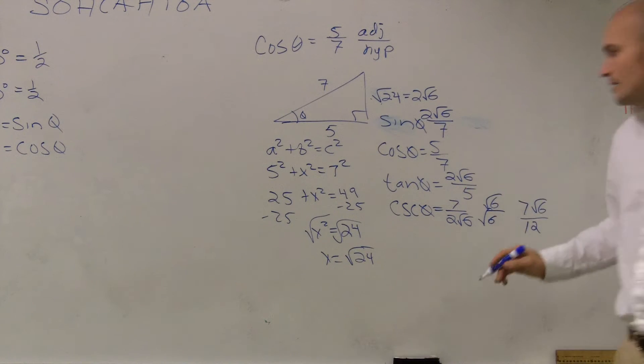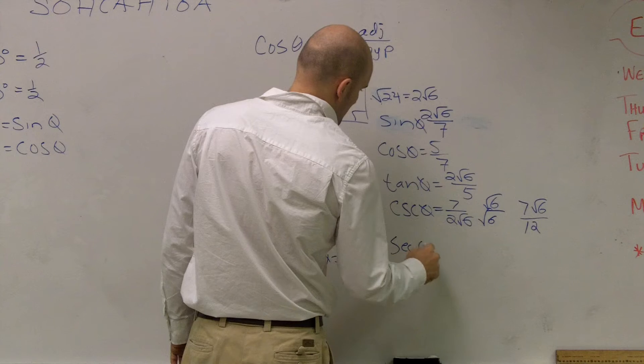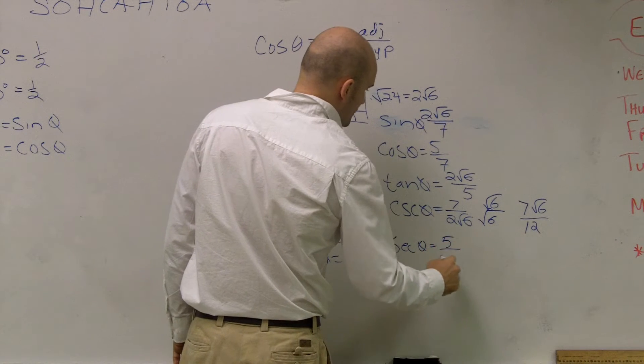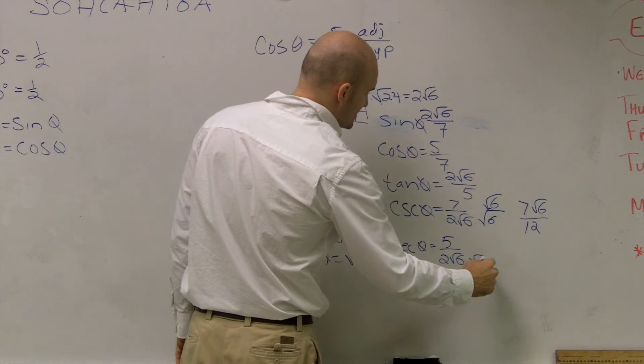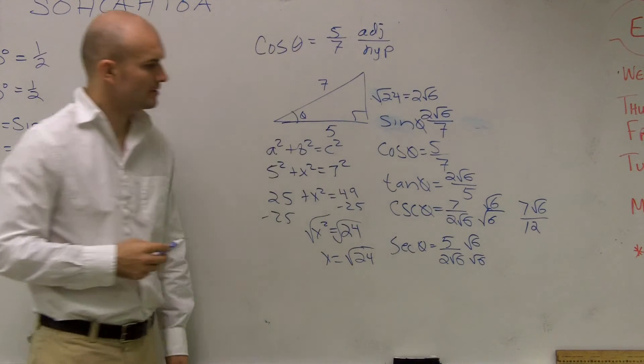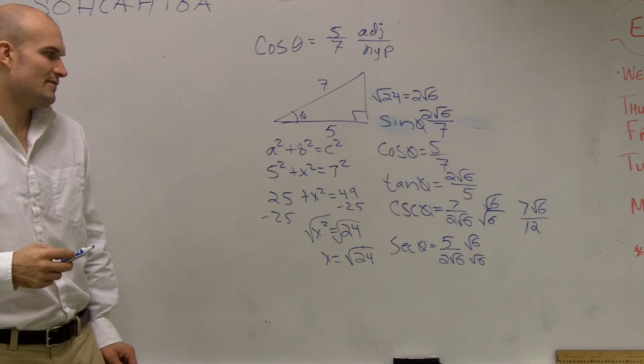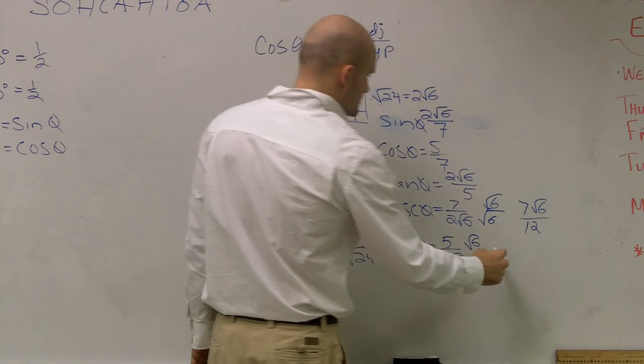All right? Here, I'm going to have the same thing for secant. But now, it's going to be 5 over 2 root 6. So again, I need to rationalize the denominator by multiplying my root on top and bottom. So here, I'm going to have 5 root 6 over 12.